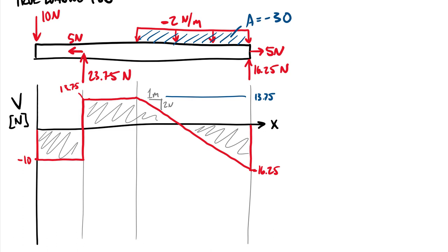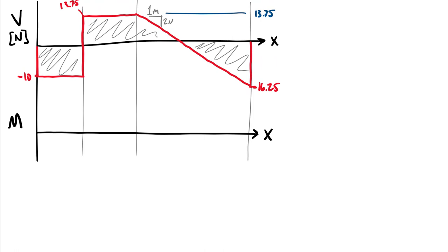For the moment diagram we follow the same process, though it is a bit more complex because we have a distributed shear across the beam. Here is my x-axis for the moment diagram. There are no couples in this problem, so I don't anticipate any vertical shifts — not at the beginning, not at the end, not in the middle. Only a concentrated couple would give that vertical change, so I start at zero and end at zero. The shear value is the slope of the moment; starting with shear of minus 10, the slope right here is minus 10 to 1.